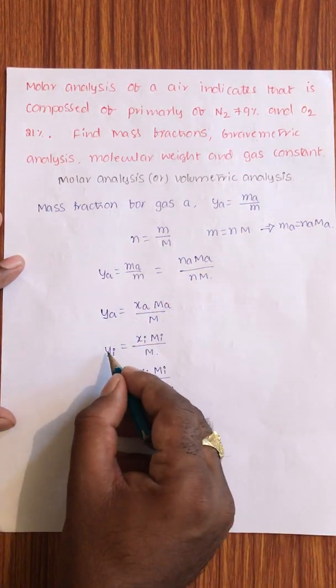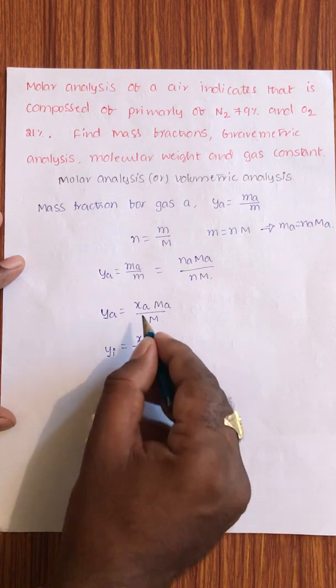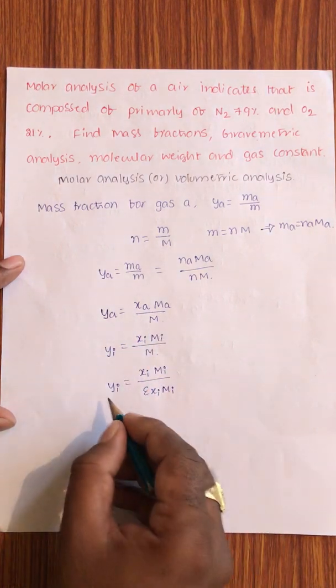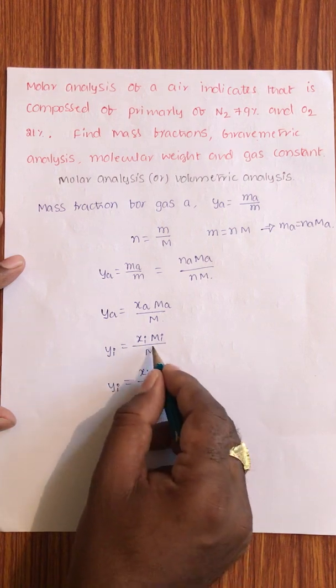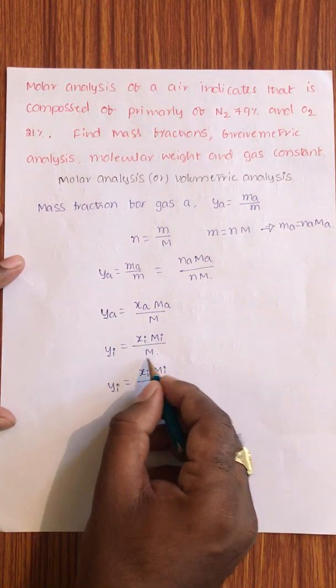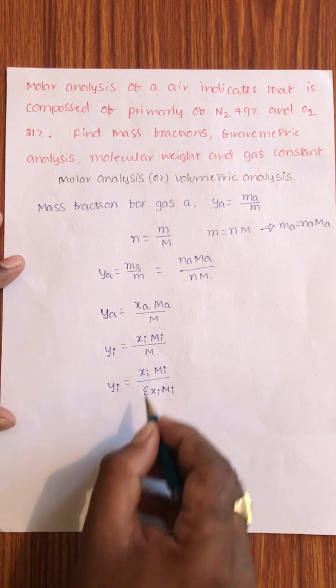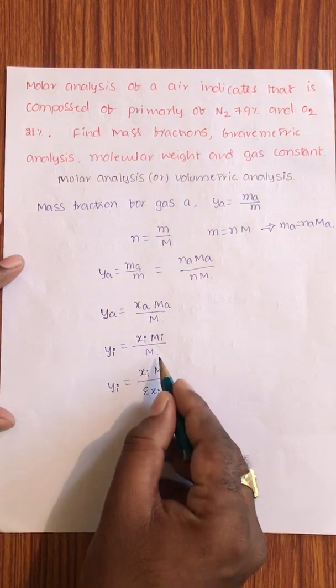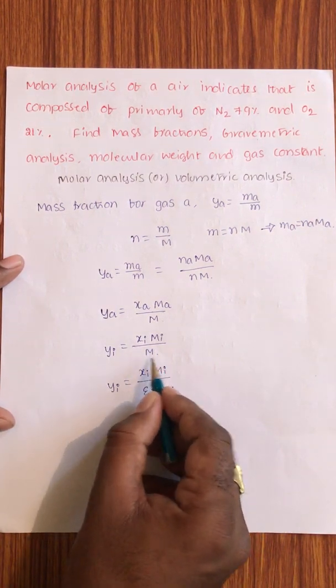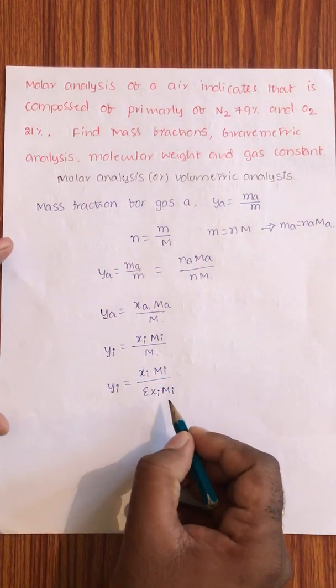If I write for gas i, Yi equal to Xi Mi by M. This M is the molecular weight for the mixture that can be written as series of Xi Mi. These are already derived in the last classes. M is equal to series of Xi Mi.